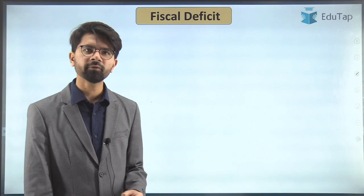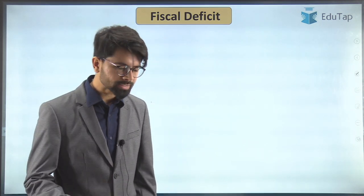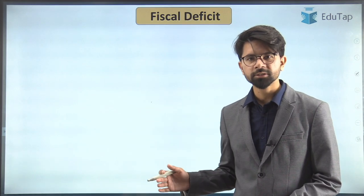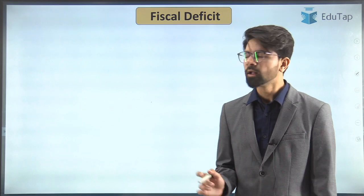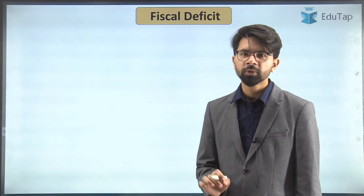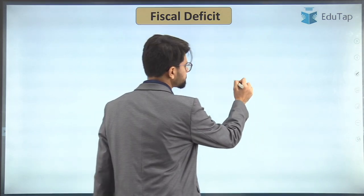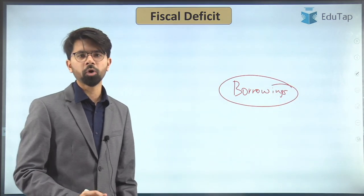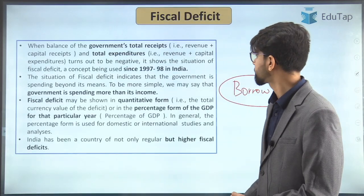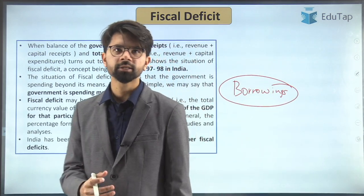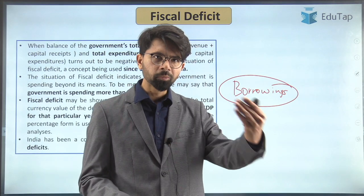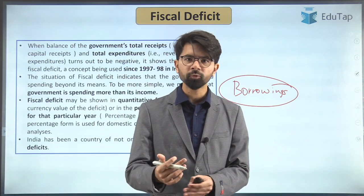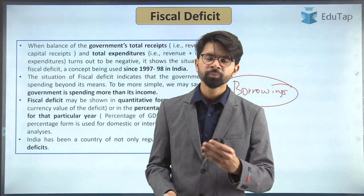First and foremost, fiscal deficit is the most important terminology when we talk about the budget. What exactly is fiscal deficit? You should be able to explain it in a very simple manner. Fiscal deficit is nothing but the borrowings of the central government. If a family is spending more than what it is earning, then it is running into a deficit. Similarly, if the government is spending more than what it earns, then it is known as fiscal deficit.